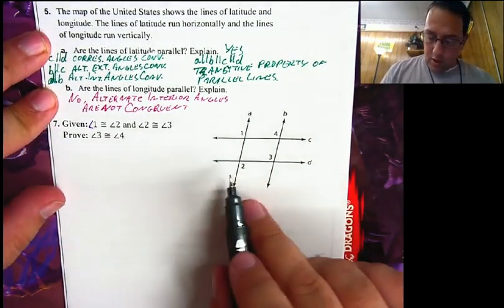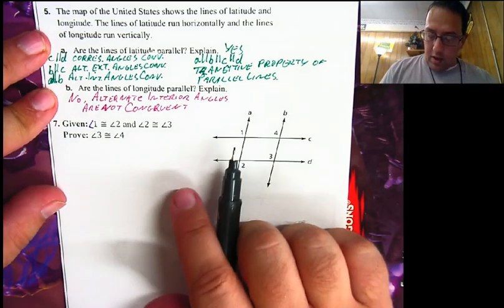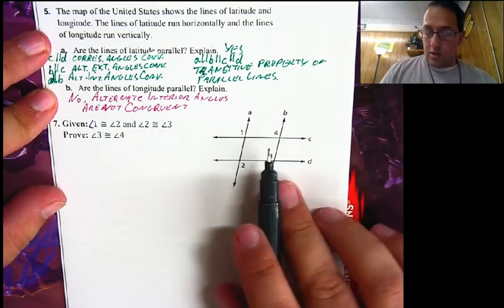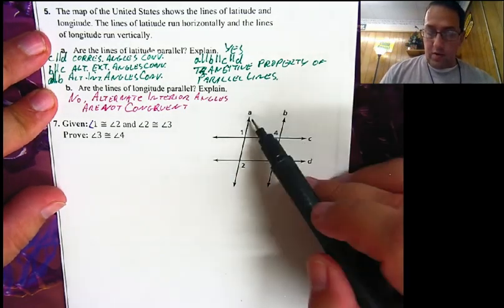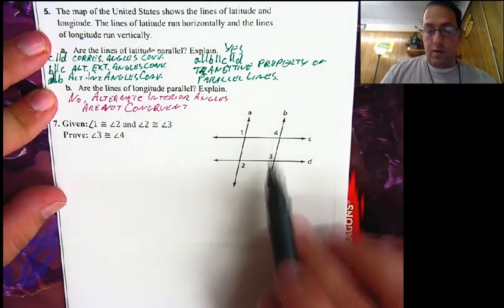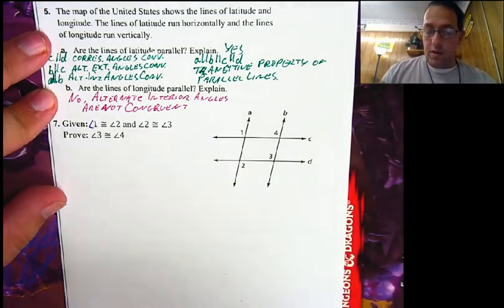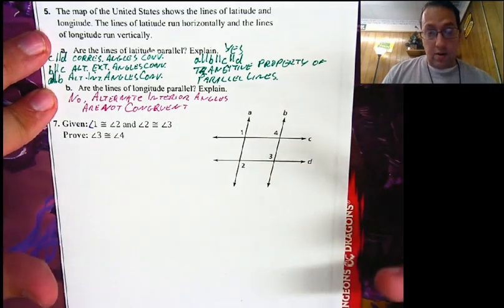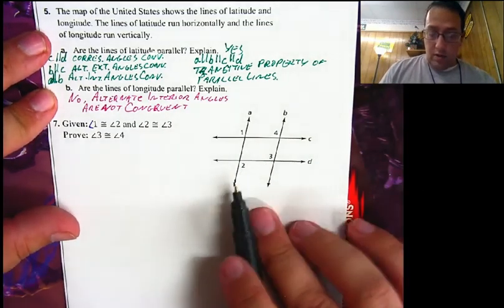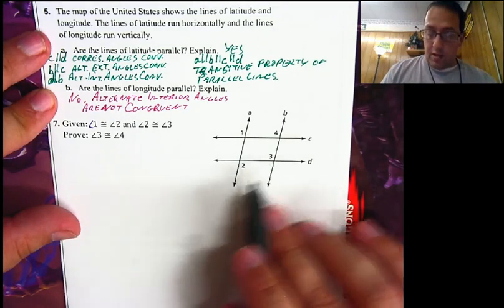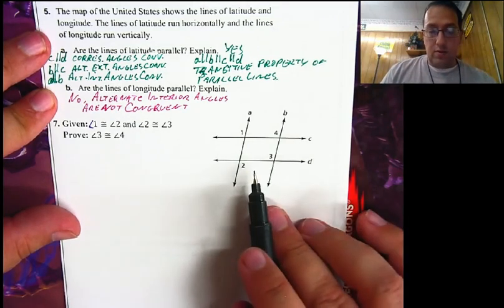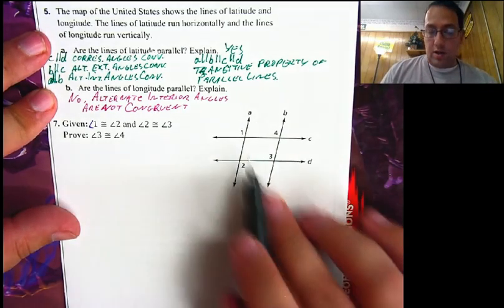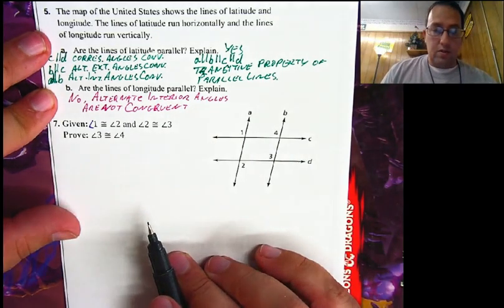Angles 1 and 4 are corresponding angles. If I know A is parallel to B, then corresponding angles are congruent. Can I get A parallel to B? Yes — I know angles 2 and 3 are congruent, and these are alternate interior angles. If alternate interior angles are congruent, then the lines are parallel. So that gives me A parallel to B, and then I can say angle 1 is congruent to angle 4.